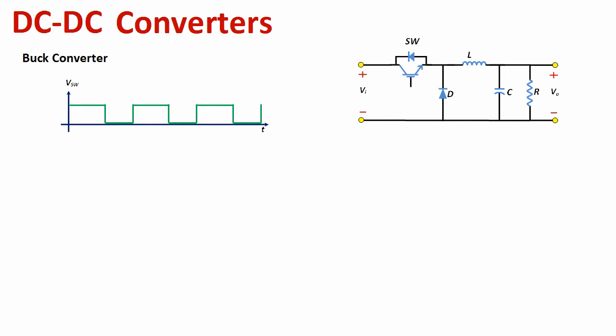The frequency of the rectangular pulses is a function of the time period T_switch. The duty cycle is the ratio of the on-time over the total period of the switch. So the on-time is D times T_switch, where D is the duty cycle. We can therefore control the output voltage by controlling the on-time of the switch, which is a function of the duty cycle.